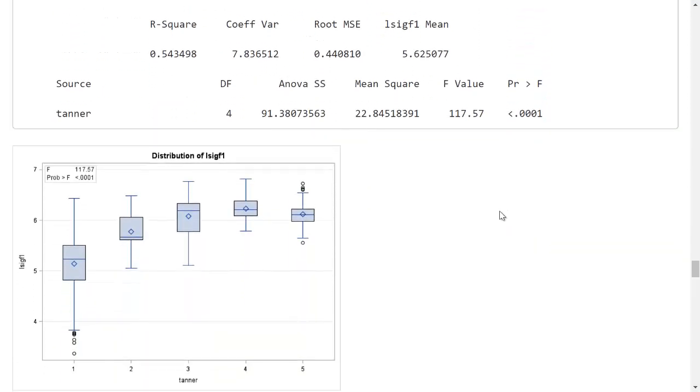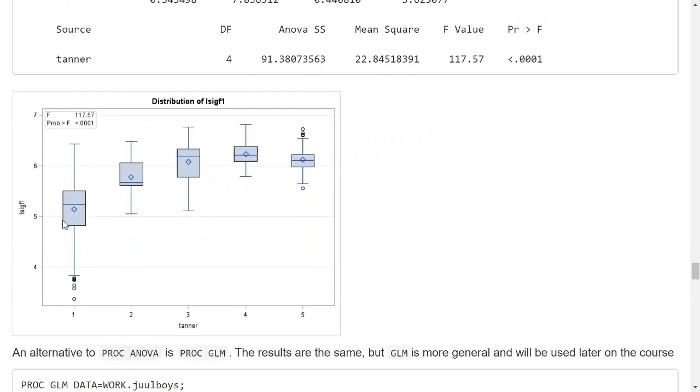And then the graphical output is very useful, because here I see box plots of the outcome variable, the log transformed SIGF1, and I have the F-test and P-value up here.